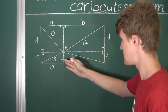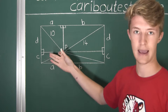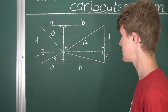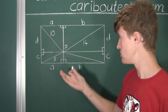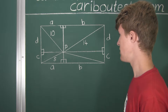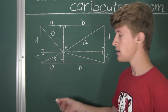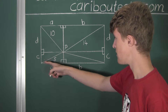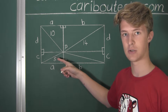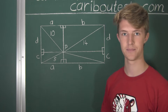Now we can see there are a lot of triangles, and since they all have a right angle in them, all these triangles are right triangles inside the rectangle. This means we can use the Pythagorean theorem to create some relations. The Pythagorean theorem states that in any right triangle, the square of the length of the line opposite to the right angle equals the sum of the squares of the other two lengths.